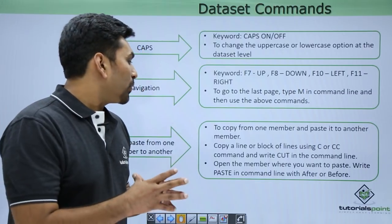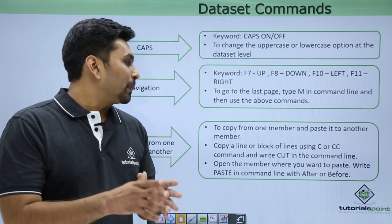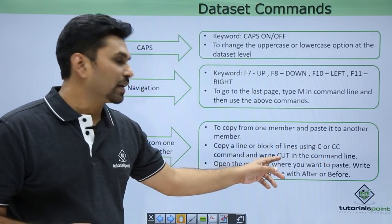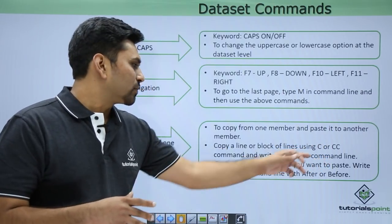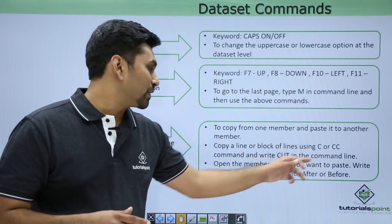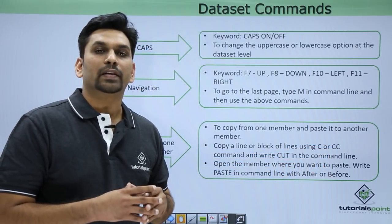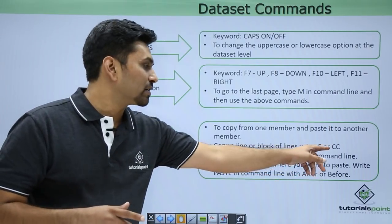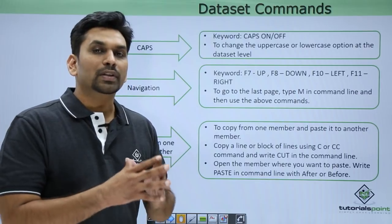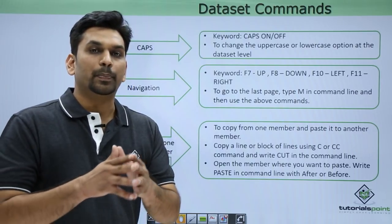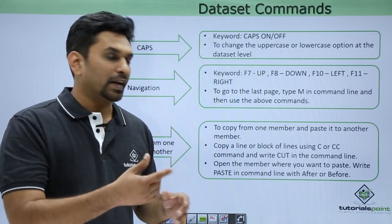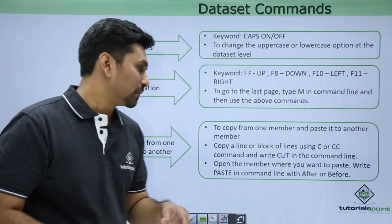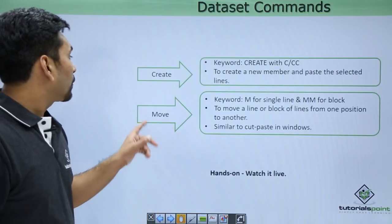Next is copy-paste operation from one member to another. We use C for a single line and CC for a block of lines. Type 'cut' in the command line and hit enter — all selected blocks will be copied. Open another member, write 'paste' in the command line, then write 'after' or 'before' and hit enter to paste the lines.